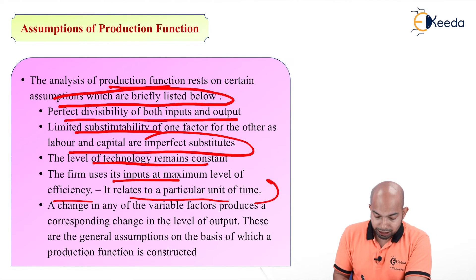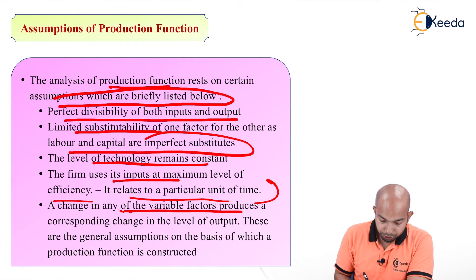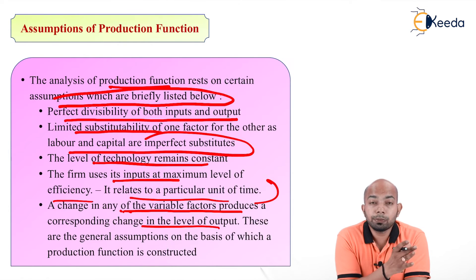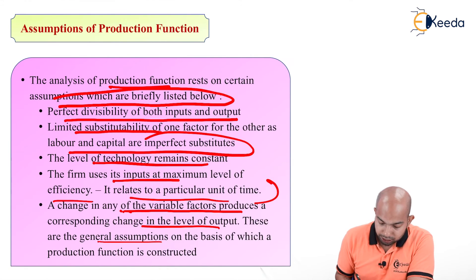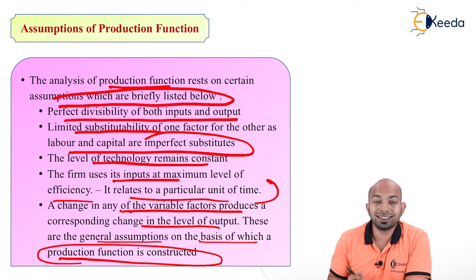And the last one refers to a change in any of the variable factors produces a corresponding change in the level of output. So whatever variable factors, if they are changing, there is a change in the level of output. This is what we assume. It may stand still also. These are general assumptions on the basis of which a production function is constructed.